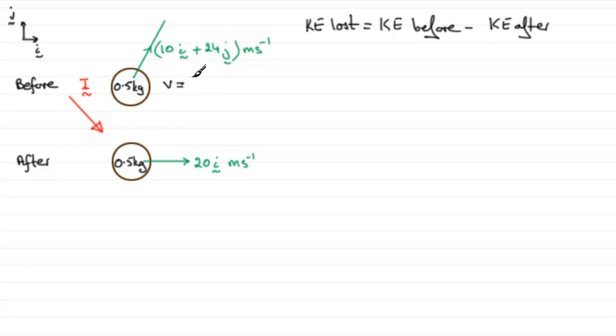It's going to be the square root of the sum of the squares of these two components, so 10 squared plus 24 squared, and that works out to be exactly 26.